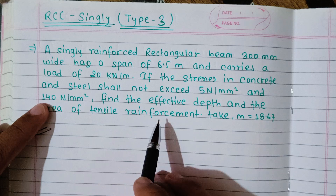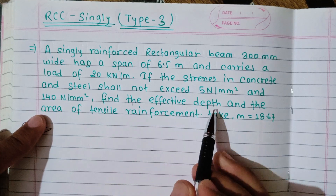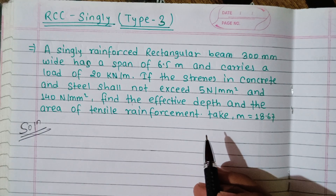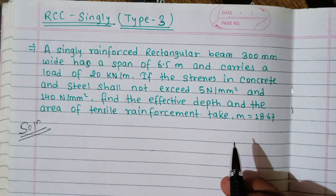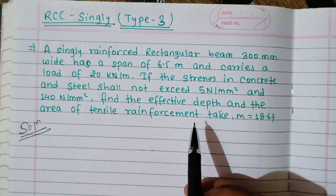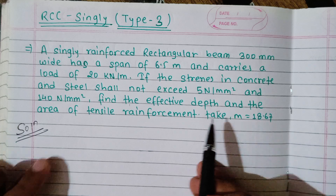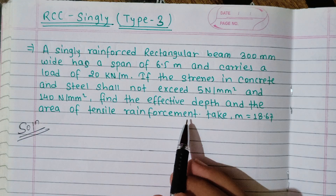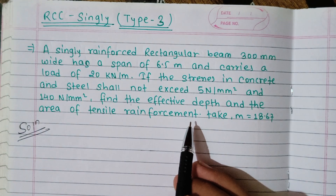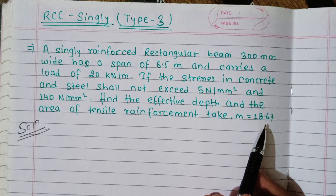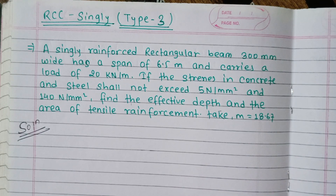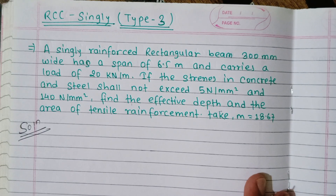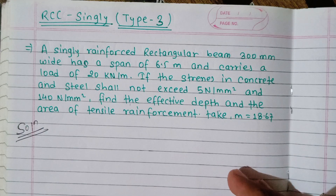If the stress in concrete is 5 N/mm² and in steel is 80 N/mm², find the effective depth. Obviously for Type 3 we need to: find the bending moment, find the moment of resistance, find stresses (first type), find the reinforcement area AST, find D, and take m equal to 18.67.